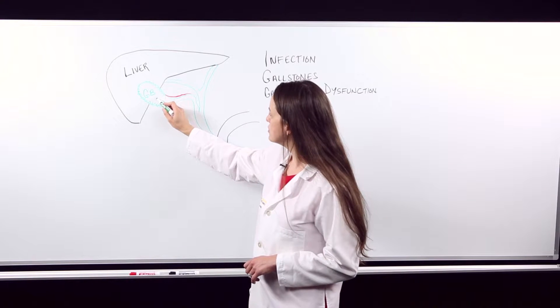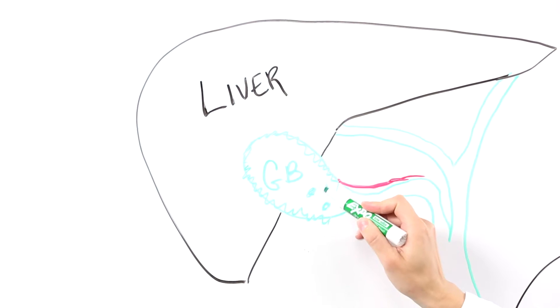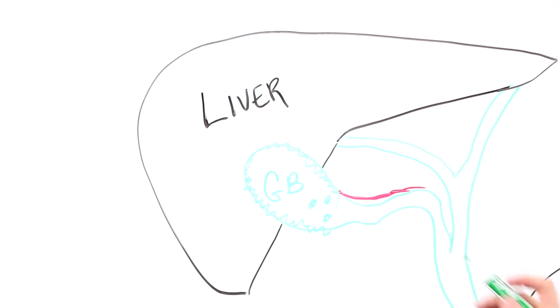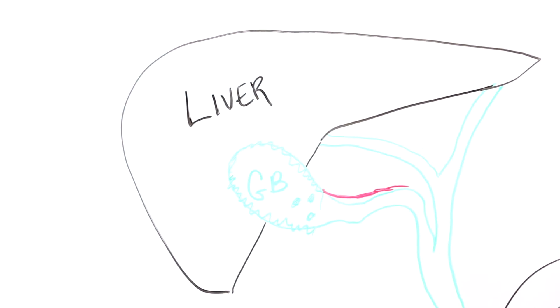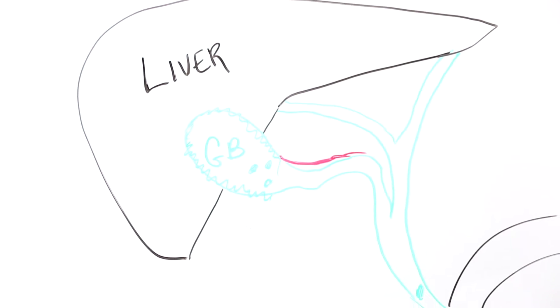If you have gallstones within the gallbladder, sometimes those can escape and go down the ducts and block the drainage of the liver or even the drainage of the pancreas causing gallstone pancreatitis.